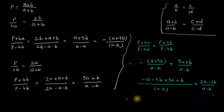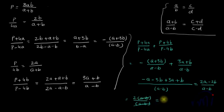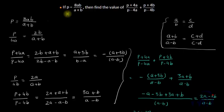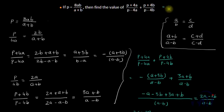This can be simplified further. Taking 2 common from the numerator gives 2(a-b)/(a-b). The (a-b) cancels and we get 2. So if p = 8ab/(a+b), then (p+4a)/(p-4a) + (p+4b)/(p-4b) = 2.